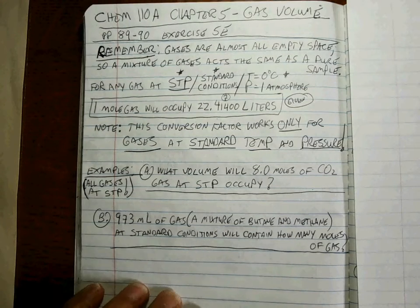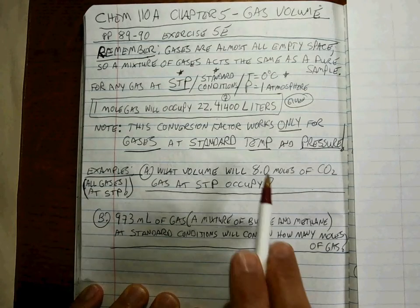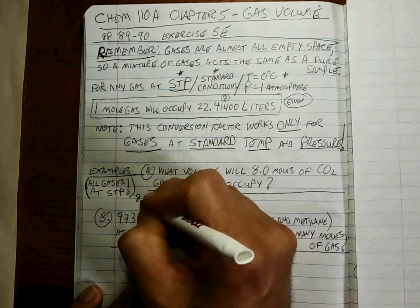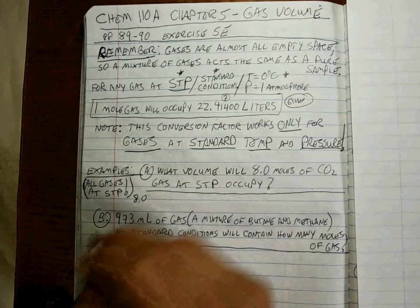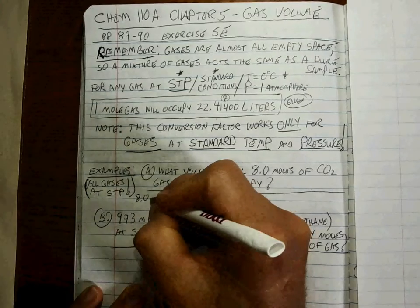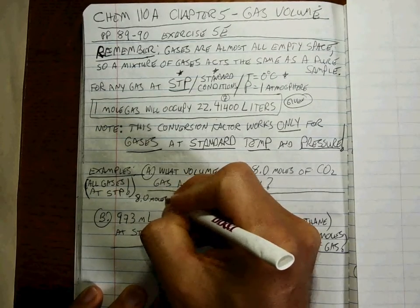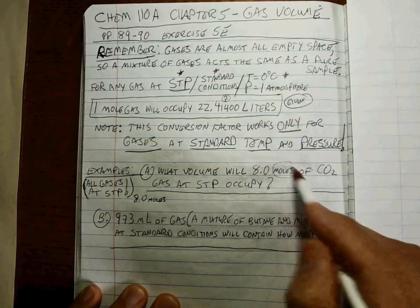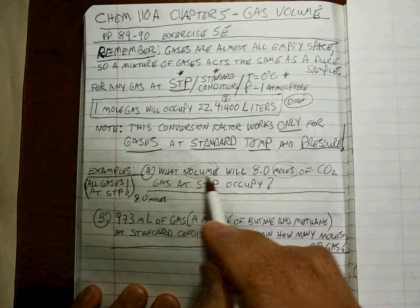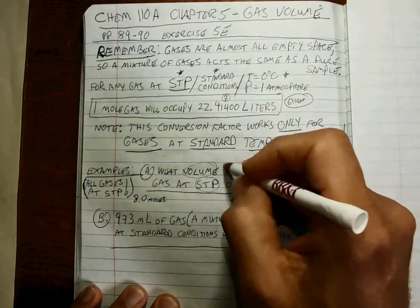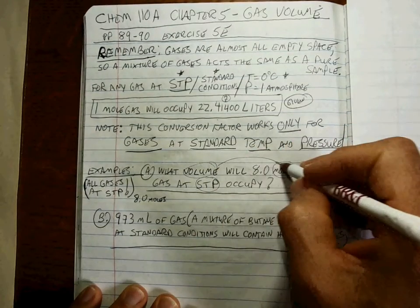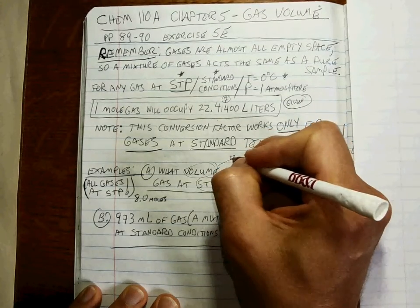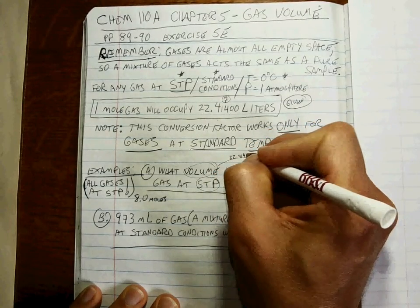So once again, when you have one value, you start with that one. We have to get a relationship between moles and volume at STP, and that's clear — that's 22.41400, right there on your conversion sheet.